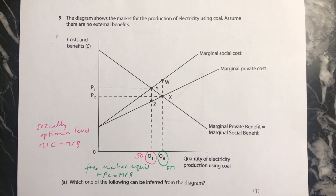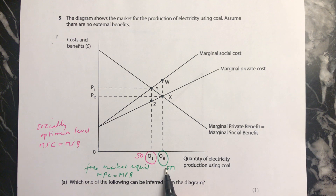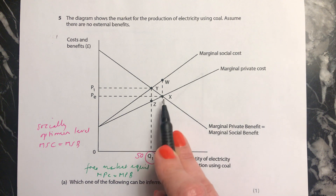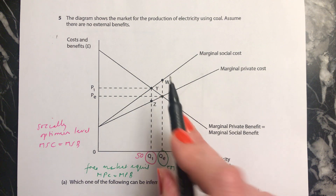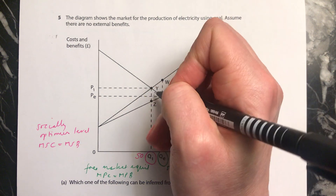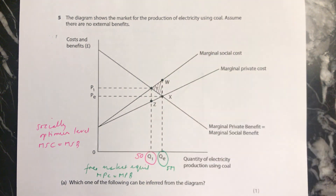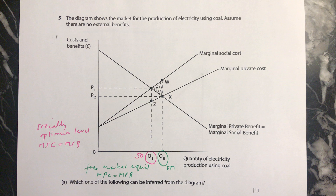Before we look at the answers, we can also find out what the net welfare loss is. Where we operate at the free market level of output, the problem is that at this level of output, the marginal social benefit is down here and the marginal social cost is up here. So this triangle here is the net welfare loss.